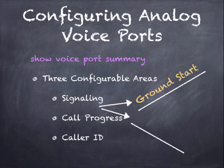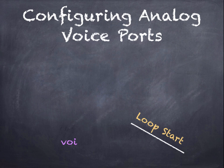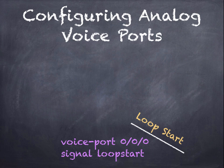With signaling, we're either going to have ground start or loop start. Ground start is more commonly seen with a PBX machine in a business environment. Loop start is the type of signaling you would see in a home or home office — the type of phone line the phone company runs to a typical house. If you have an FXO port on a router, its default signaling is set to loop start, so you wouldn't need to type this command.